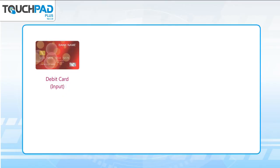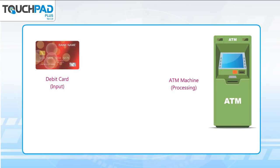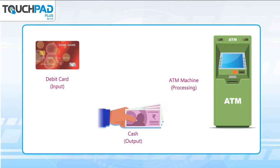Debit card is the input. ATM machine is processing. You insert the debit card, which is the input, into the ATM machine, where it is processed. And you get your output, which is the cash.